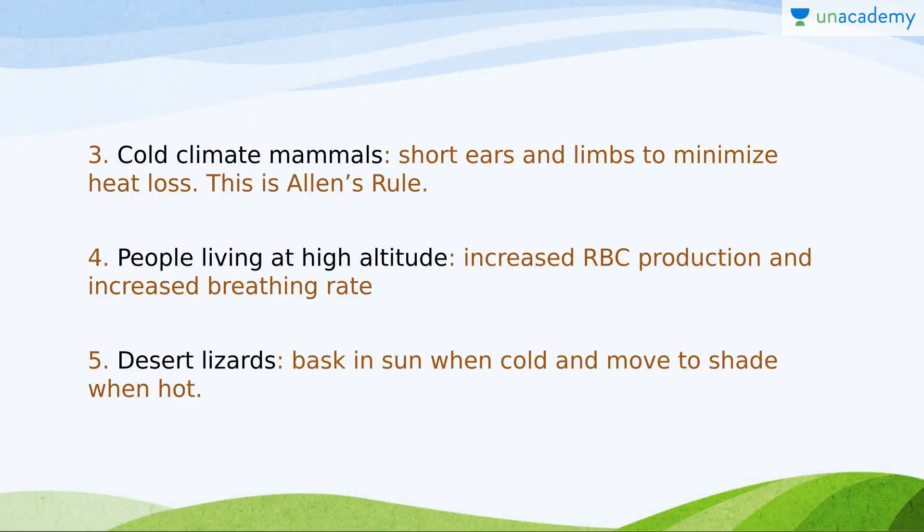In cold climatic mammals, they have short ears and short limbs to minimize heat loss — this is Allen's Rule. These organs have a high surface area to volume ratio, so heat dissipation would be higher; therefore they are very much reduced. Also, people living at high altitude have increased RBC production and increased breathing rate, because at high altitude the partial pressure of oxygen is too low.